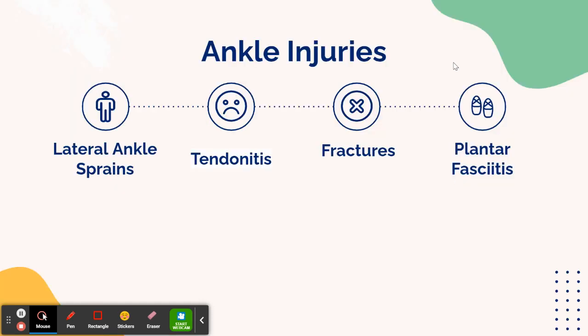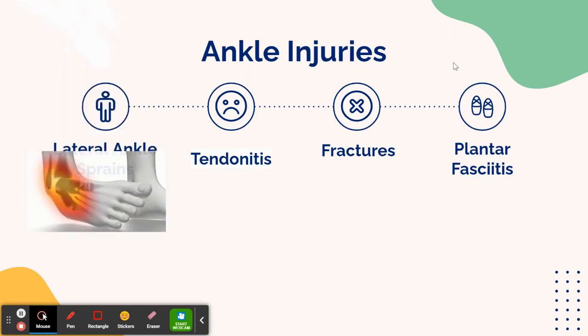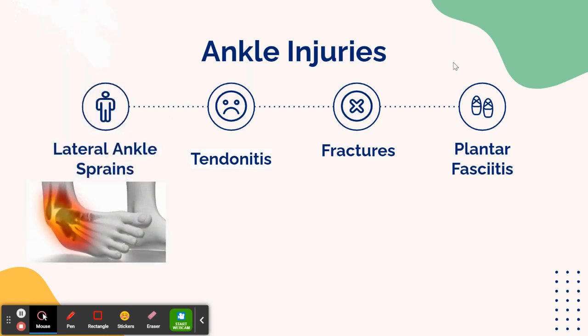So what are the different types of ankle injuries that are most common for a dancer? First is lateral ankle sprains. Lateral ankle sprains are caused by an inversion movement of your foot that causes damage to your lateral ankle ligaments — the ATFL, CFL, and PTFL.